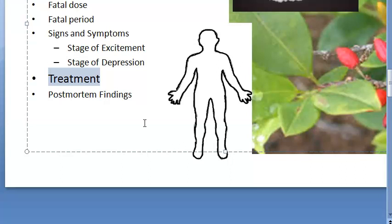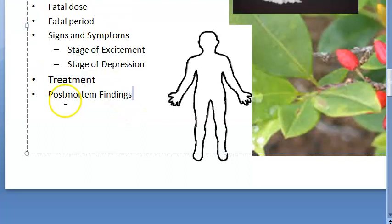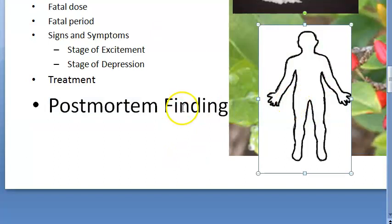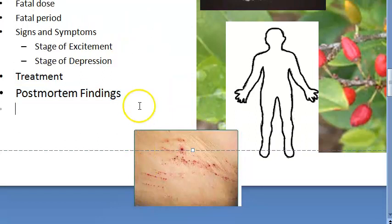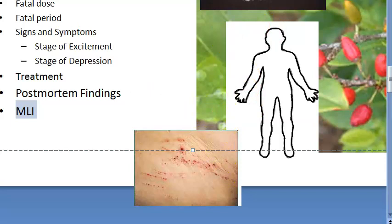Postmortem findings include linear excoriations, which are scratch marks and are of medico-legal importance. Medico-legal importance: cocaine can be used as substance abuse; deaths can be accidental, suicidal, or rarely homicidal. Overdose can be seen in body packers and body stuffers. It can also be used as an aphrodisiac to increase sexual drive and duration of sexual act.